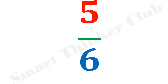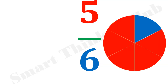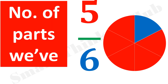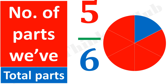Consider fraction 5 divided by 6. This is its graphical representation. Here, 5 means the number of parts we have, and 6 means the total number of parts. In the pie graph, 5 is represented by red color and the blue color represents the sixth part.